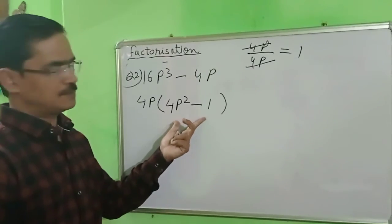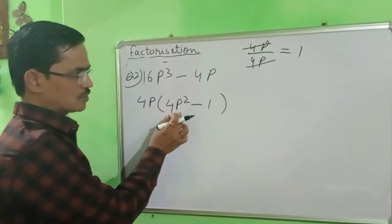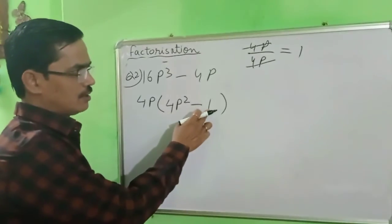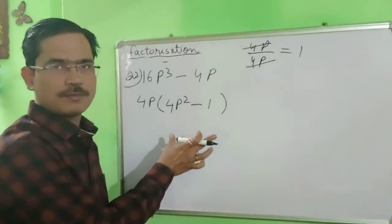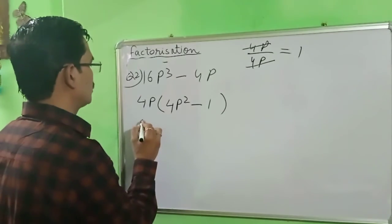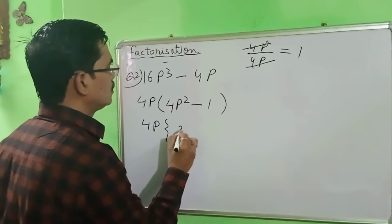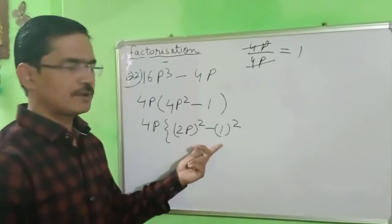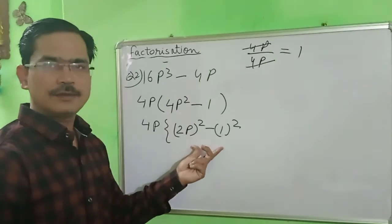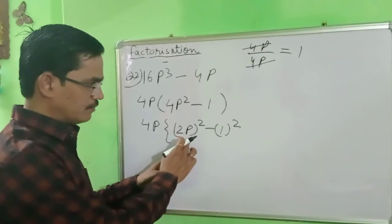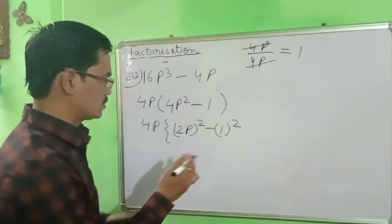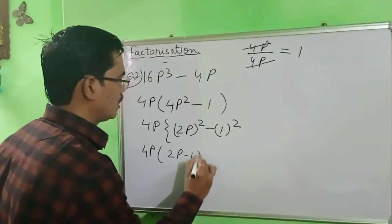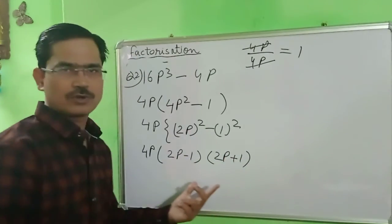Now again you can see here the formula is a² minus b². We have 4p² which is (2p)², and 1 which is 1². So here again the formula a² minus b² applies. So 4p² minus 1² gives us (2p minus 1)(2p plus 1). So we get 4p times (2p minus 1)(2p plus 1). In this way you can solve all these questions very easily.